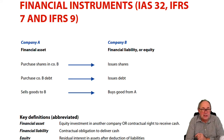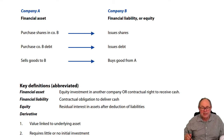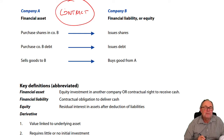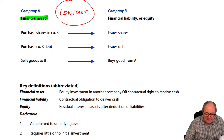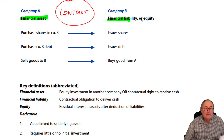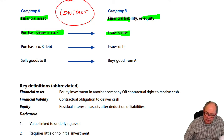One thing you will have understood in your earlier studies is that a financial instrument is all about a contract between two companies. There are all sorts of possibilities. One of the companies will have a financial asset and the other company will have a financial liability or equity. A financial asset could be that you own shares in another company — in that case that company has issued shares and issued equity.